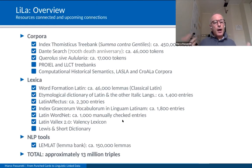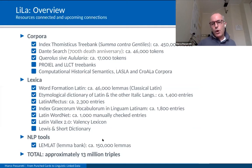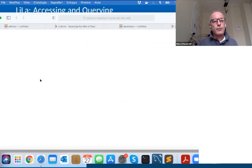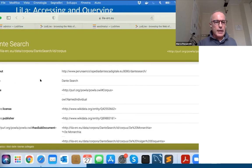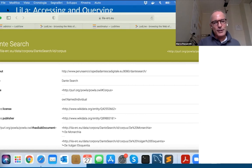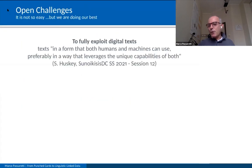An overview of the resources currently connected in LiLa and upcoming connections shows some corpora, some lexica, and the lemma bank built upon an extended version of a powerful morphological analyzer for Latin called Lemlat. Among the linked resources is Dante Search, which collects all Latin words by Dante — and we are in the year of Dante in Italy, so everyone wanted to work on that, including ourselves.